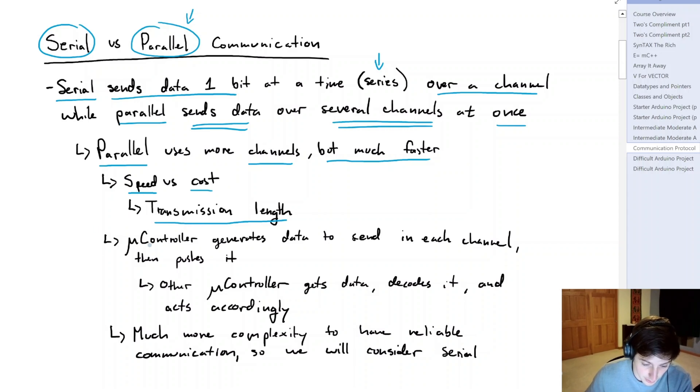So you could have something like a microcontroller that's going to generate the data and send it over each individual channel. On the receiving end, you'll have another microcontroller or something of similar nature that's going to get that data, decode it, and then act accordingly. But as we've come to learn, there's a lot of complexity in this, especially if we are prioritizing reliable communication, which is always a priority. So given the content of this course, we're going to consider serial communication for now.